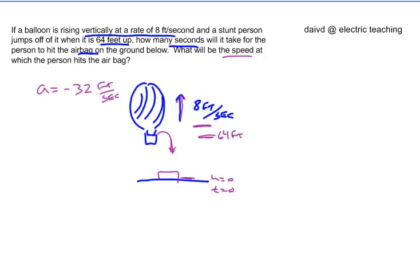If we look at the position function and its second derivative, the second derivative is my acceleration, which is negative 32 feet per second squared. Now we're going to start integrating — we're going to back up from the second derivative. We're going to integrate both sides of this equation with respect to time, dt.